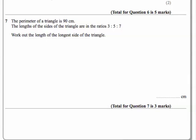Question 7. The perimeter of a triangle is 90 centimeters. The lengths of the sides of the triangle are in the ratios 3 to 5 to 7. Work out the length of the longest side of the triangle.